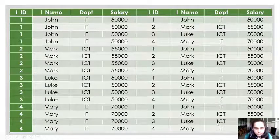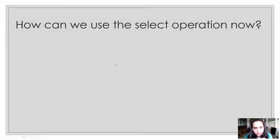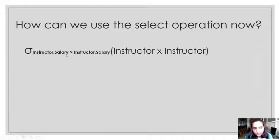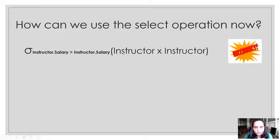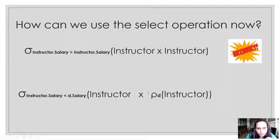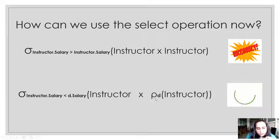Now suppose I want to use the select operation. Can I use it in this manner: sigma instructor.salary greater than instructor.salary, and then instructor cross instructor? This causes ambiguity. When you say instructor.salary and instructor.salary and the relations inside the bracket are also the same, it's unclear which relation you are referring to. So this is an incorrect way — it causes ambiguity.